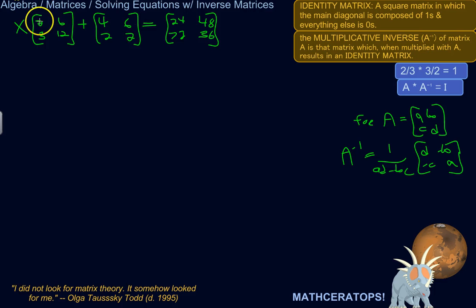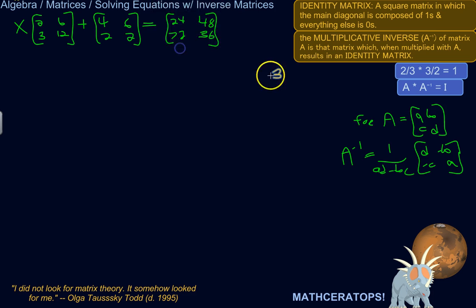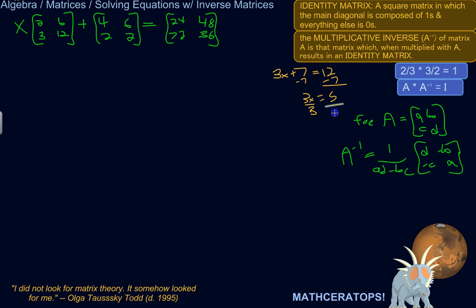So we've got X times some matrix plus some matrix equals some matrix. Just like going back to introductory algebra — 3x plus 7 equals 12. What's the first thing you do? You subtract 7 from both sides, and then you get 3x equals 5. Then you divide both sides by 3, and you'd have your answer.